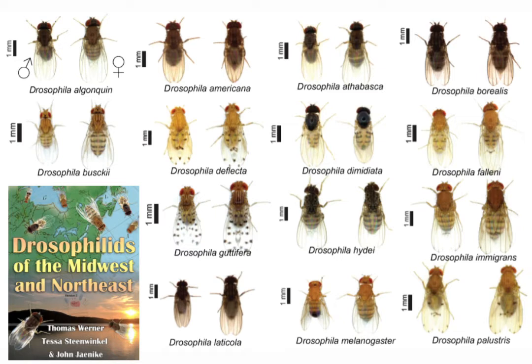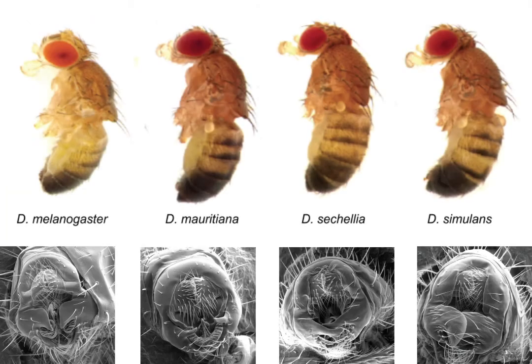Some species have clear, translucent wings, whereas others have a pattern of pigmentation spots on their wings. There are even physical differences between male and female flies, just like in many other organisms. Up close, using the powerful magnification of a microscope, we can see that males of these four particular species have unique structures that they use during mating, which vary greatly in size and shape.